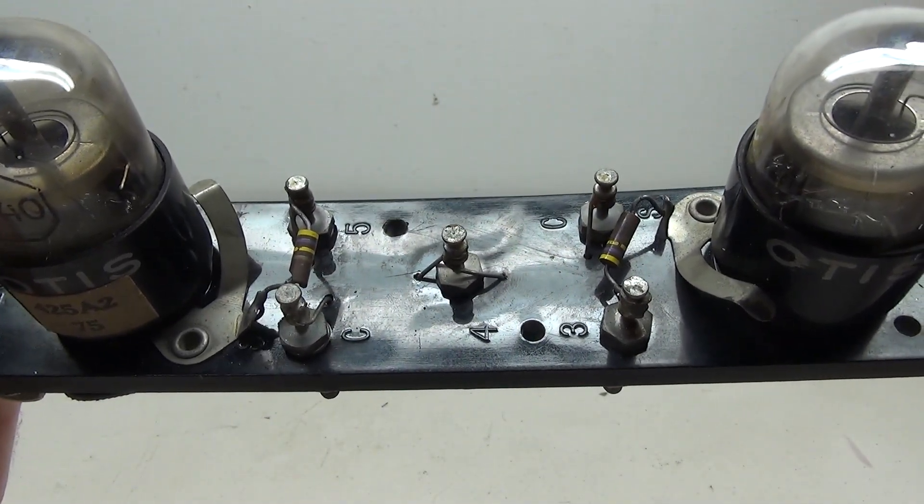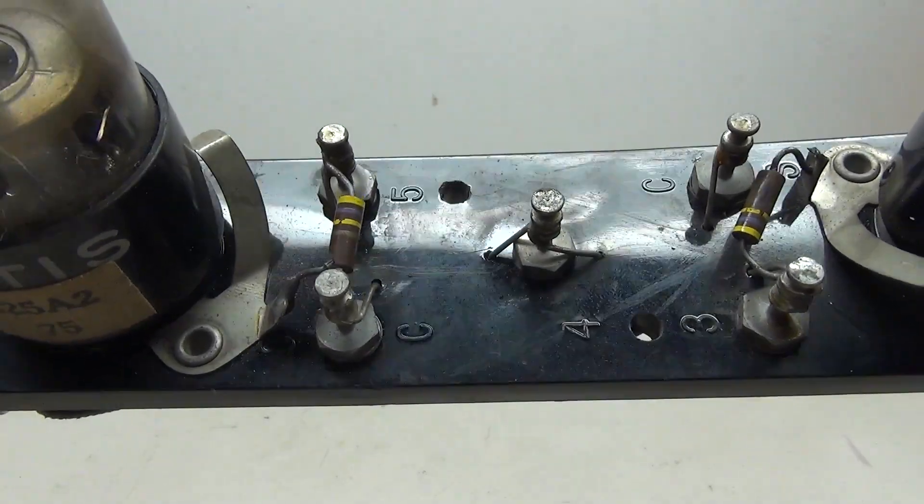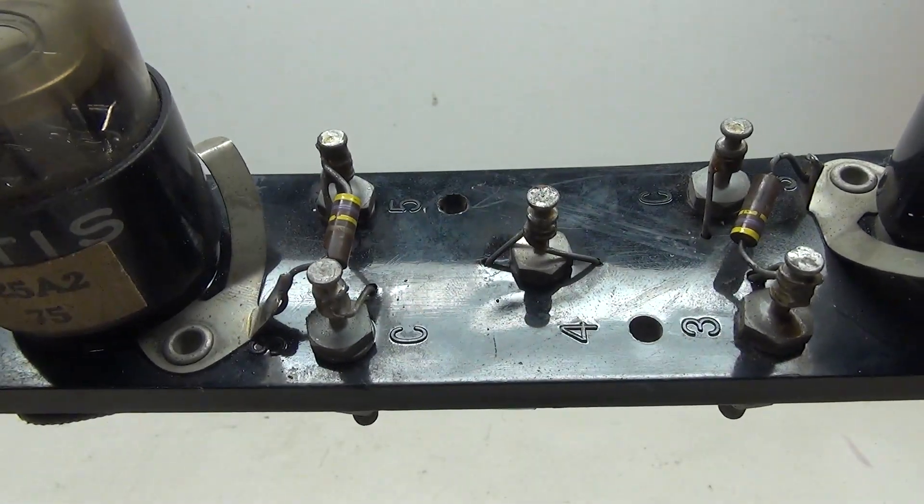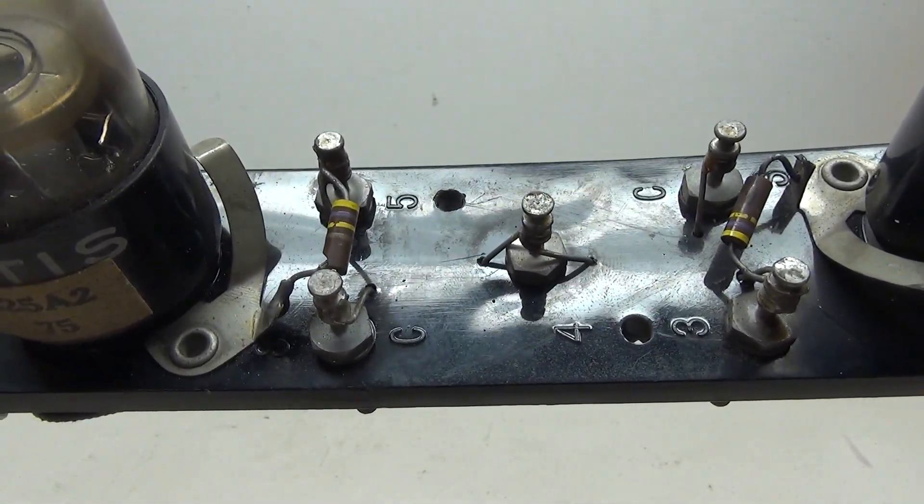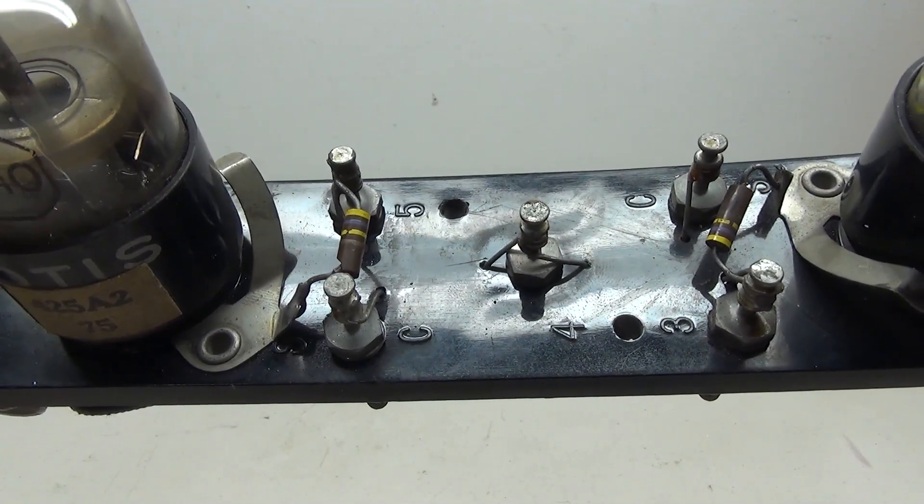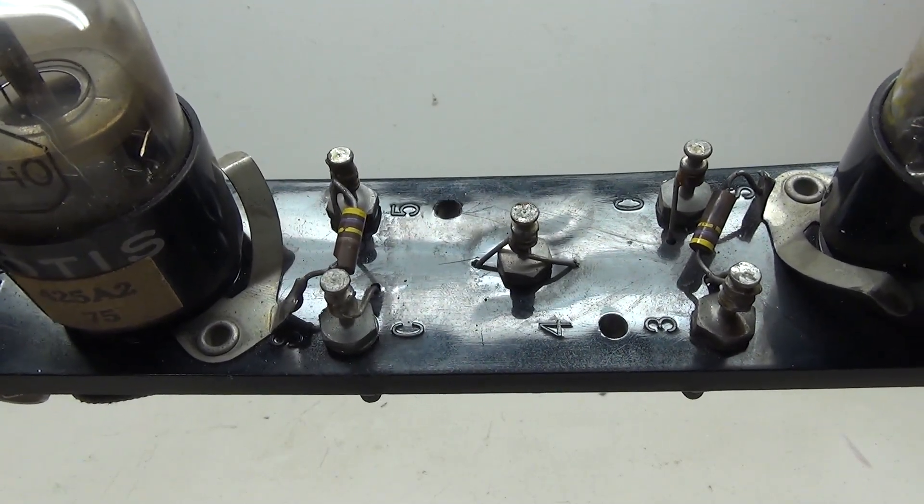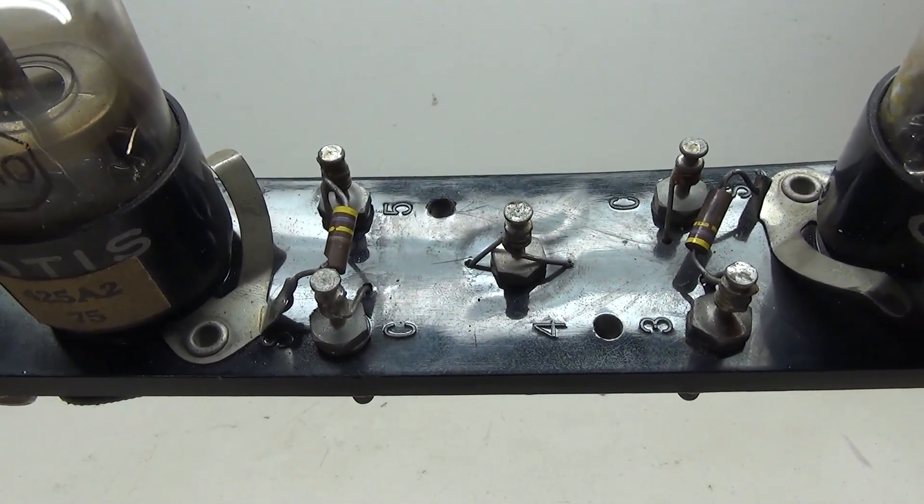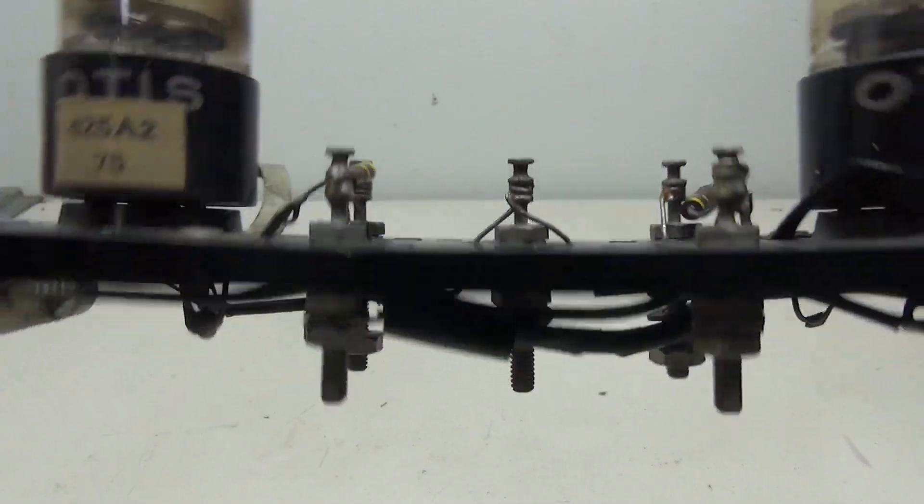So if you look at the tube base, you'll notice there are labels by each of the pins. There's 3, 4, 5, and C. The C is the cathode, 3 and 5 are the anode, and 4 is the grid. Now we won't be using the grid in this project, but I'll show you what the grid does later.